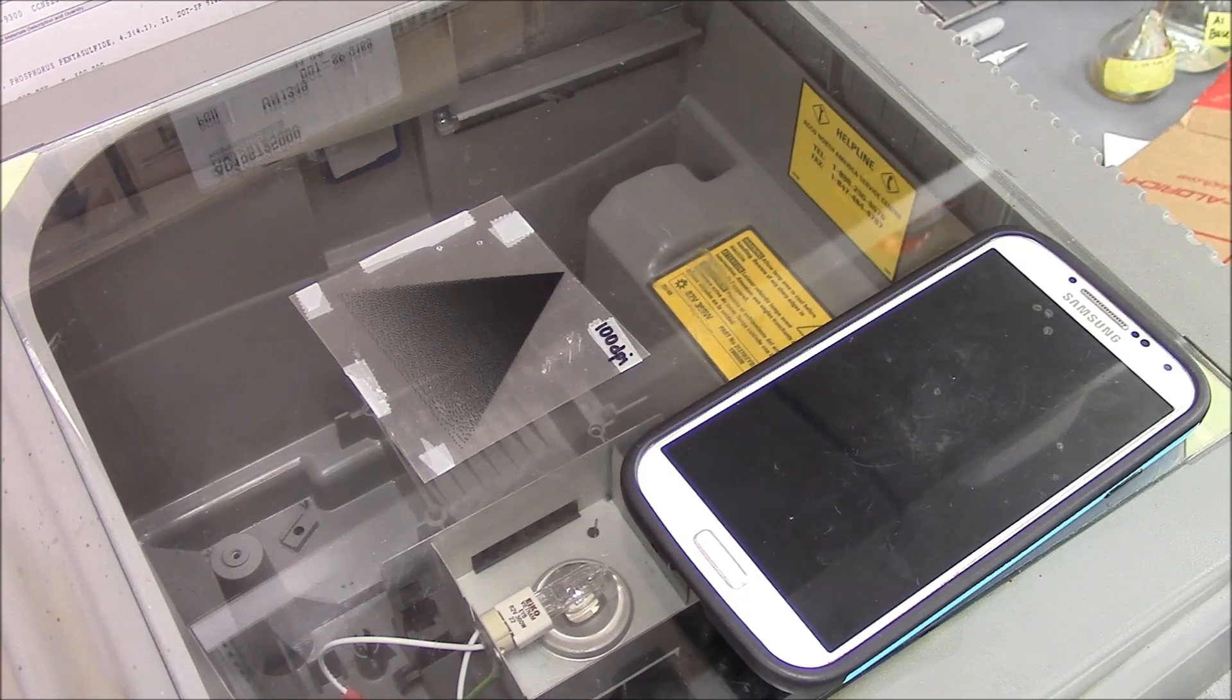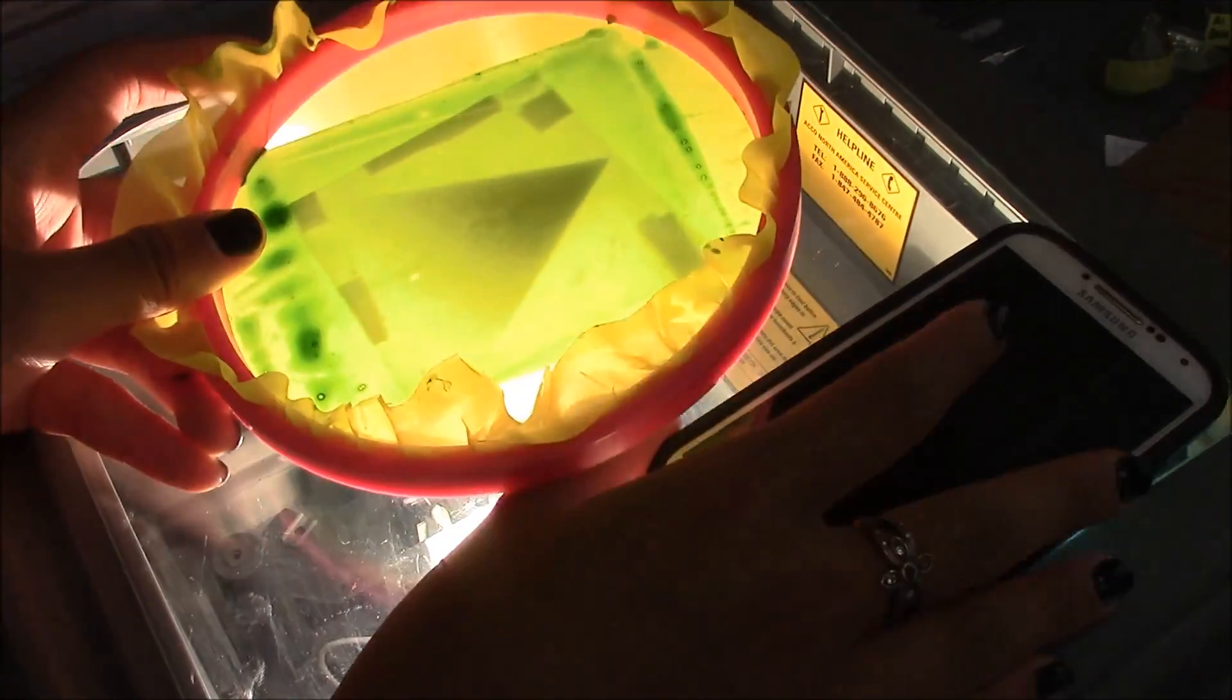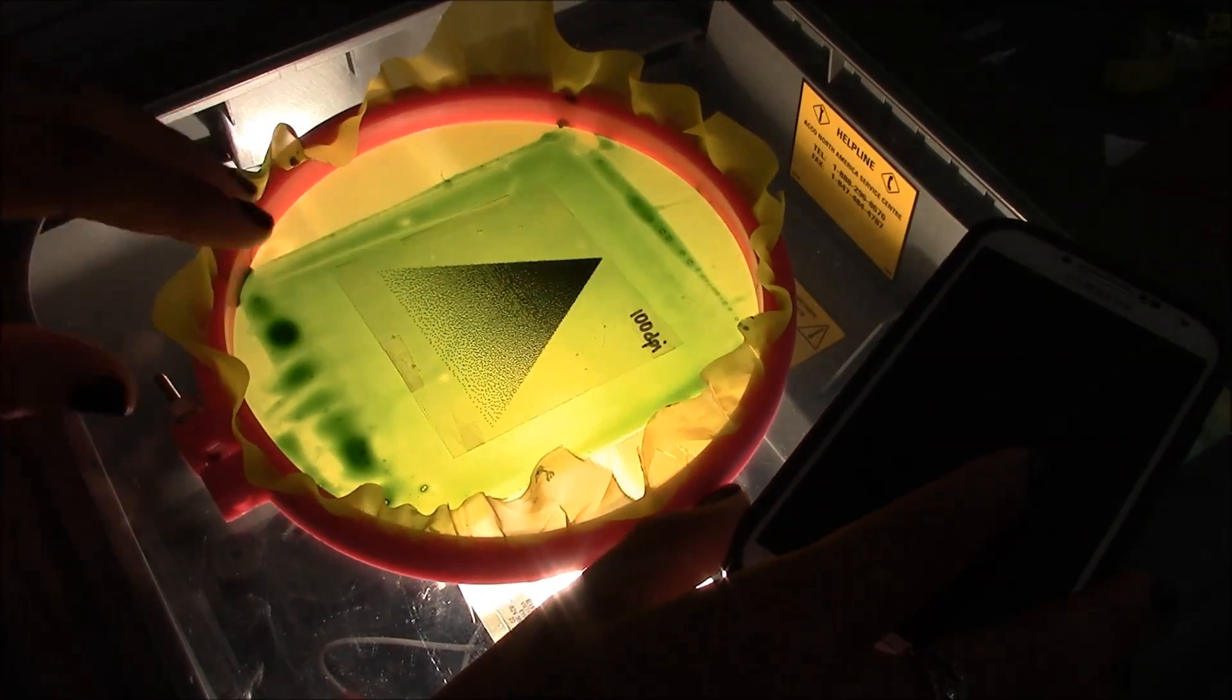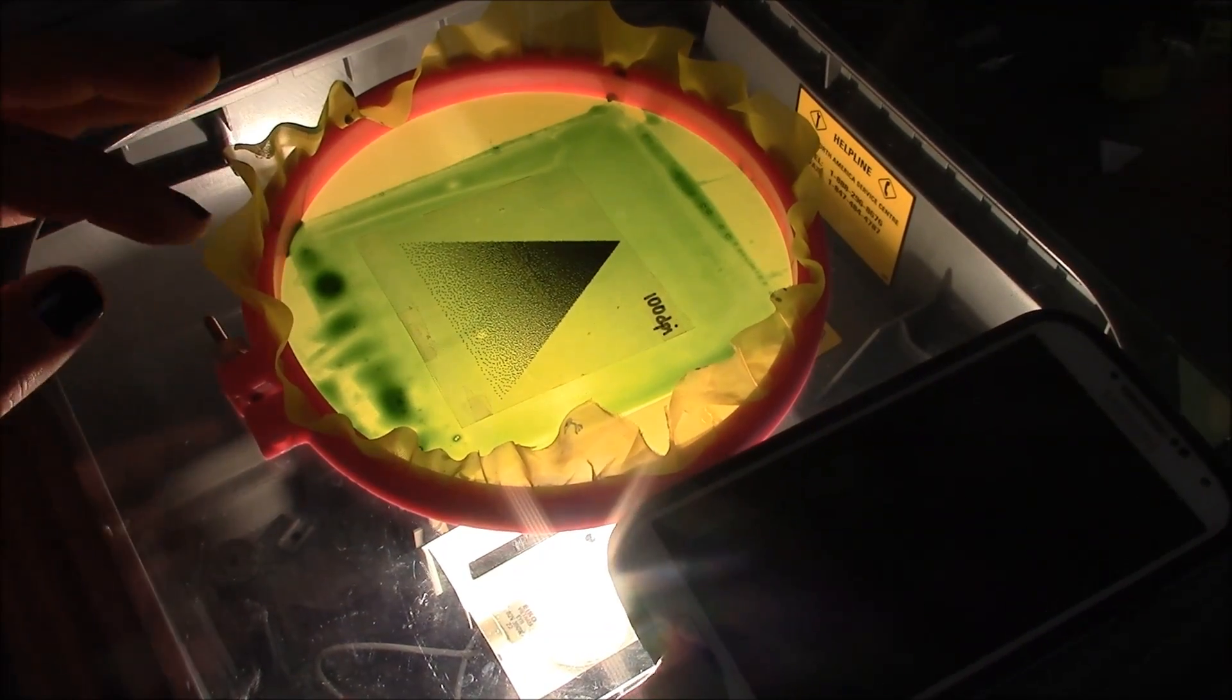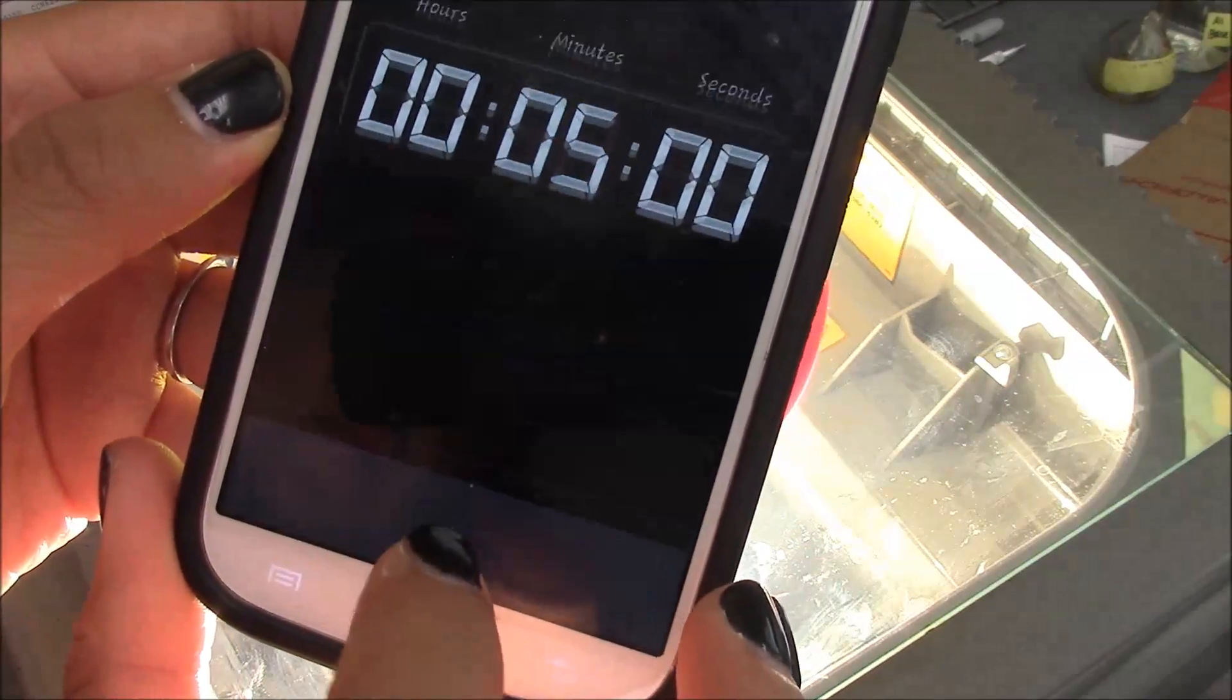Take your 100 dpi image over to the overhead projector with the removed Fresno lens. Set a timer for 5 minutes. Place your screen face down on the image and turn on the overhead light.